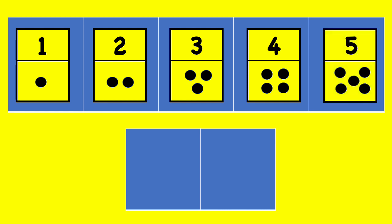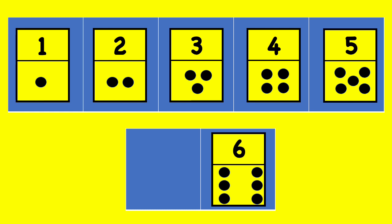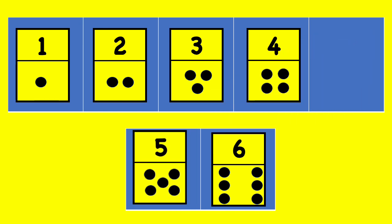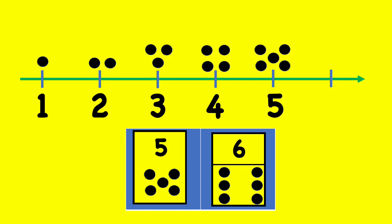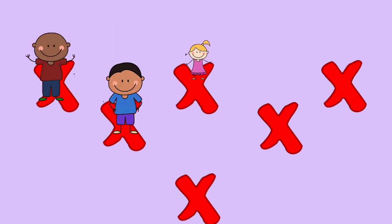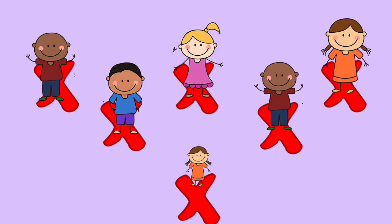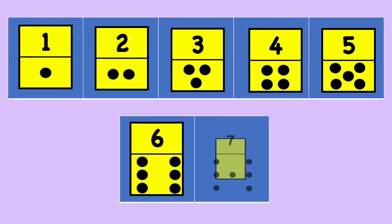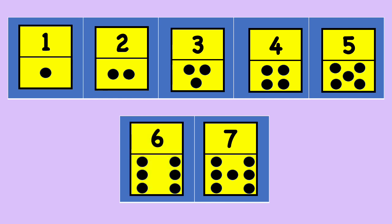Now look at this card — this card has one more dot than number 5 card. 6! 6 comes after number 5. How many crosses do you see? How many children can stand on each cross? Let's count: 1, 2, 3, 4, 5, 6.